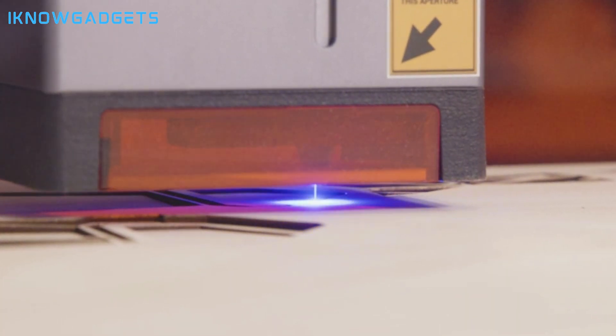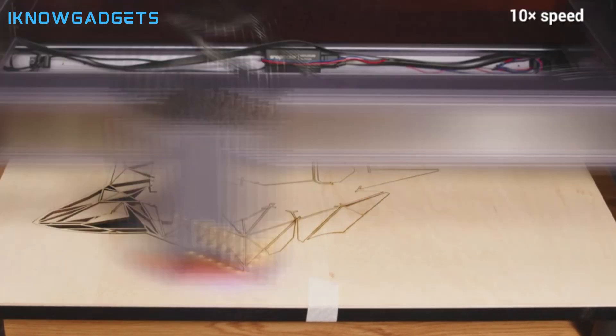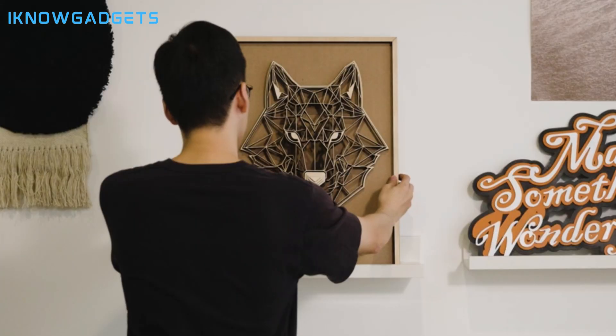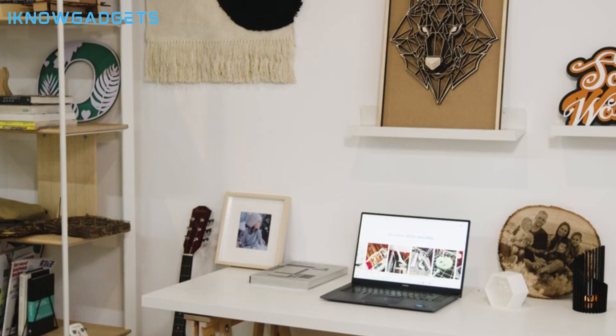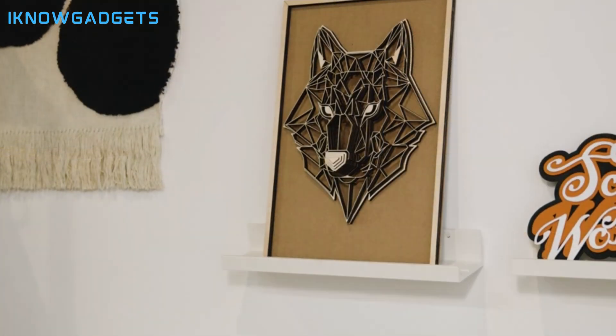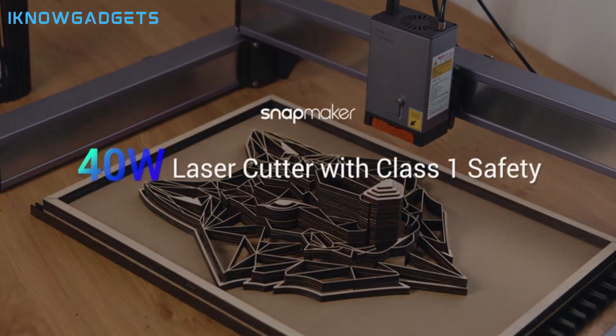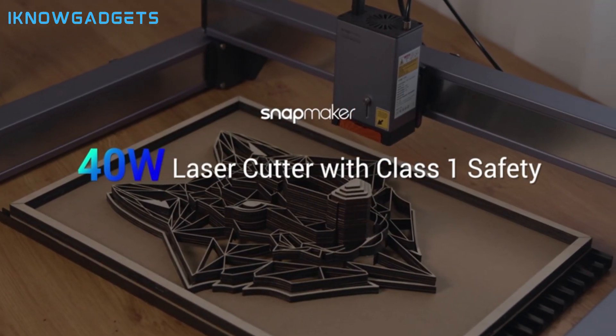Industrial grade linear rails for minimal wobble and high speed movement up to 500 millimeters per second. Essential accessories and support, including air assist pump, laser safety goggles, and compatibility with LightBurn. Immerse yourself in the Snapmaker Ray by checking the links in the description for detailed insights and reviews.